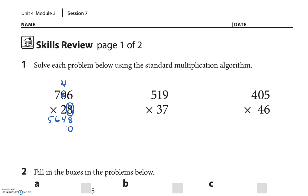I'm going to put a placeholder, then go to the tens column on the bottom number. 2 times 6 is 12 — carry that 1 over. 0 times 2 is 0 plus that 1 is 1. 7 times 2 is 14. I was really careful to line everything up: 8 plus 0 is 8, 4 plus 2 is 6, 6 plus 1 is 7, 5 plus 4 is 9, and then a 1.